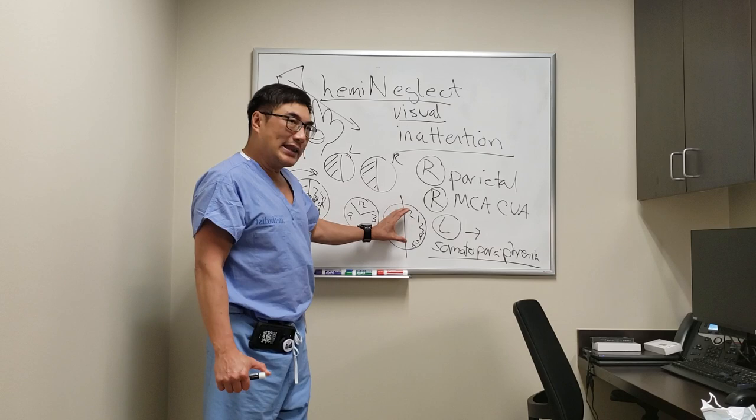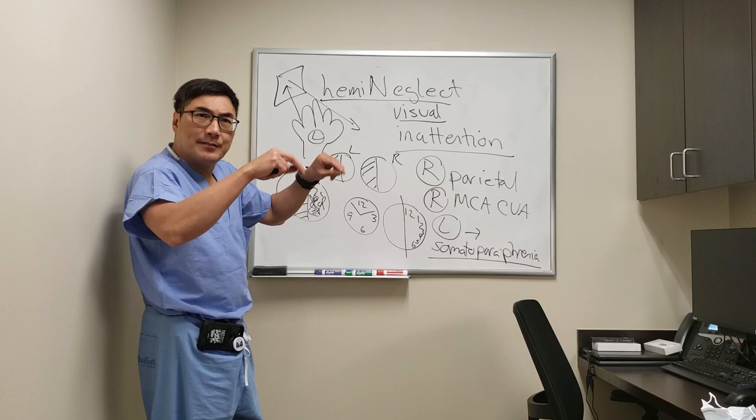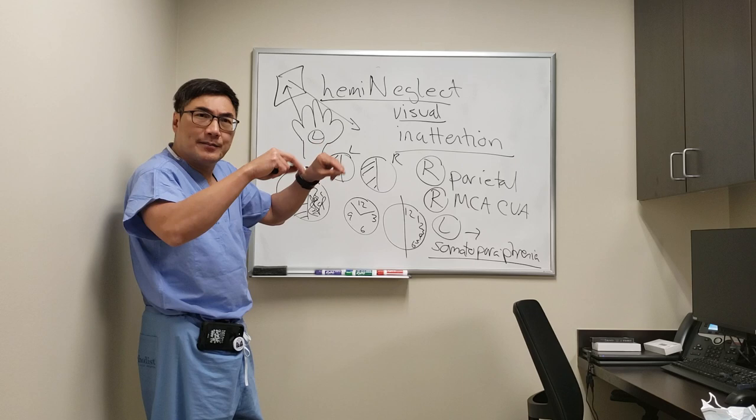The key reason to know hemi neglect is that it's an inattention problem. It seems similar to a homonymous hemianopsia but has distinctive and characteristic differences — both in the way patients copy and draw things, and in the activities of daily living that are affected. Another test you can do is bilateral simultaneous stimuli, which will extinguish on the neglect side. It's usually right parietal, usually from an MCA stroke, and may present with the very strange complaint of somatoparaphrenia.